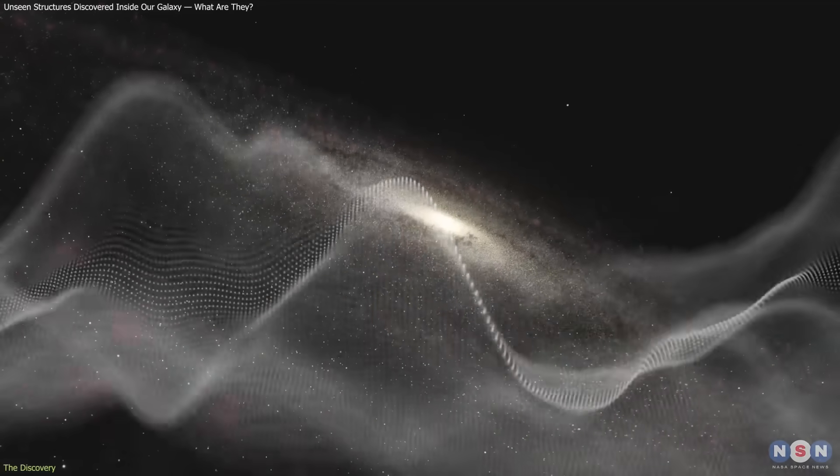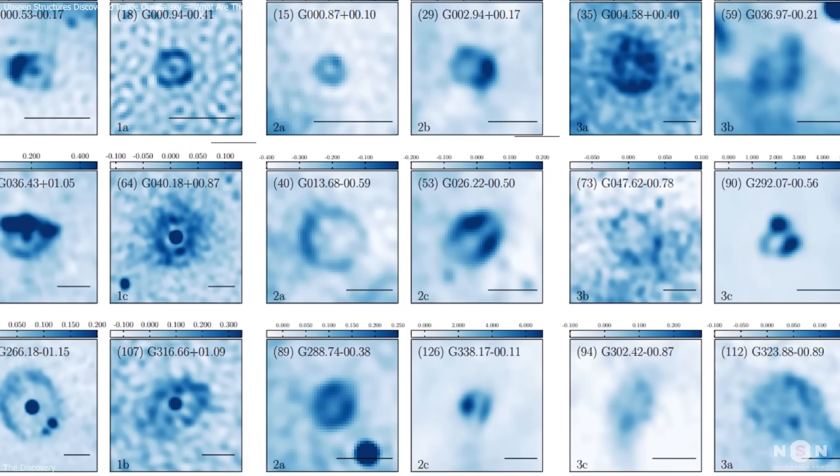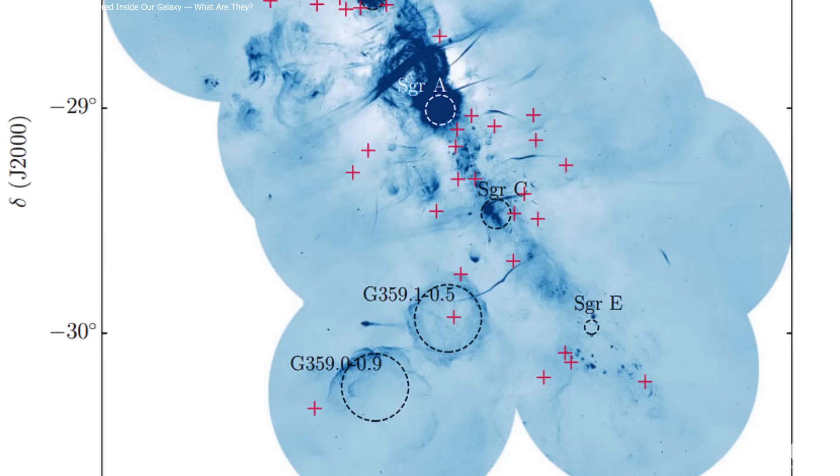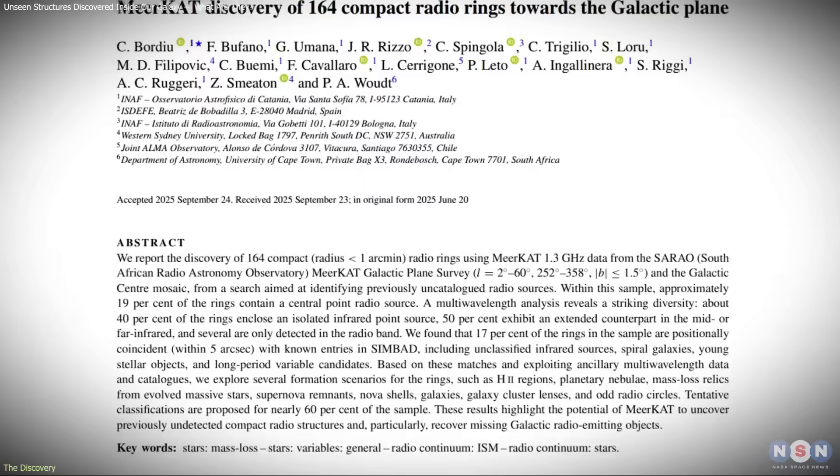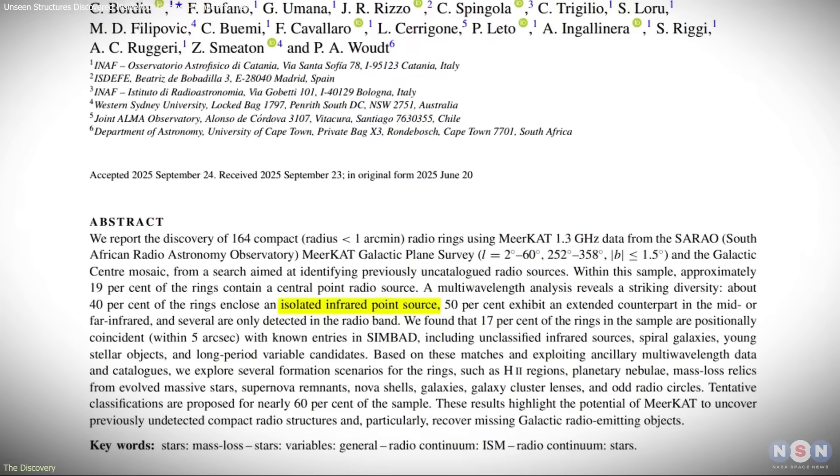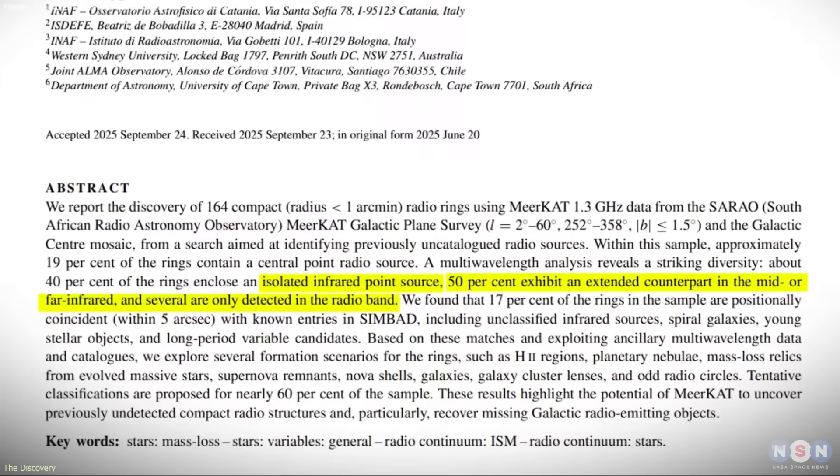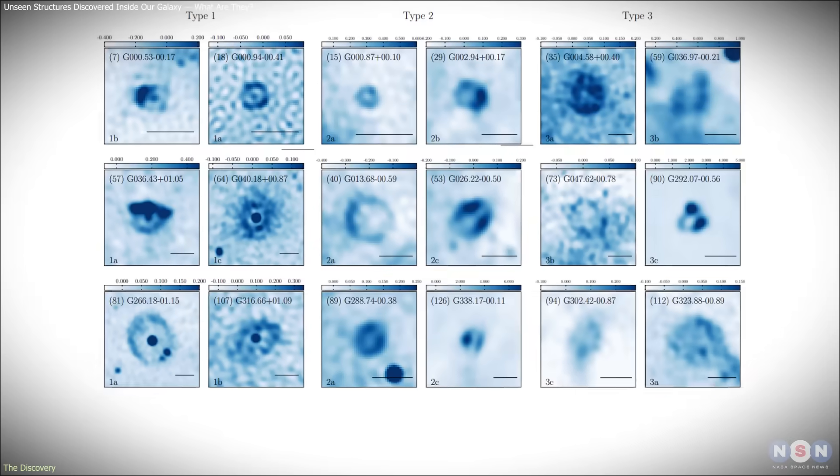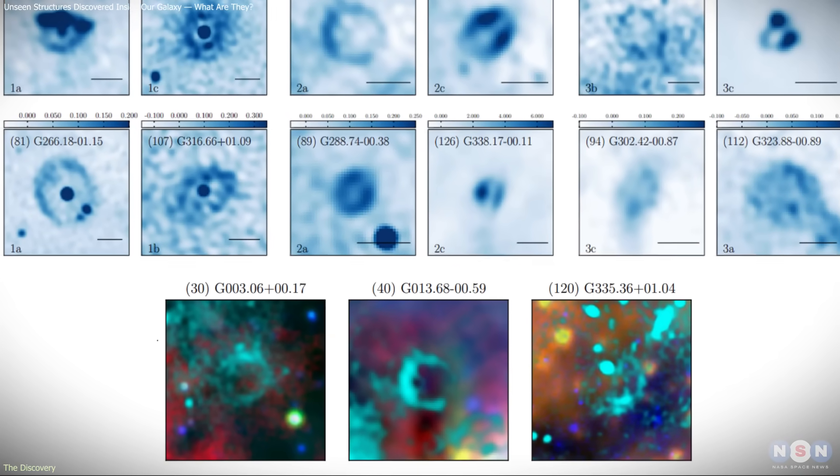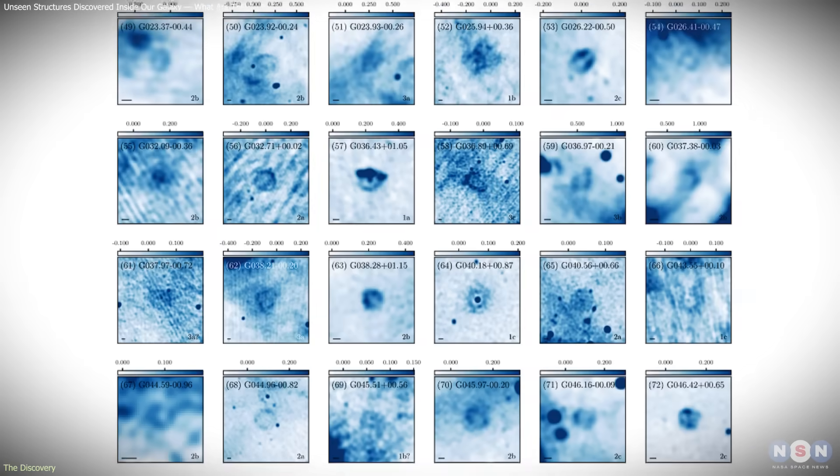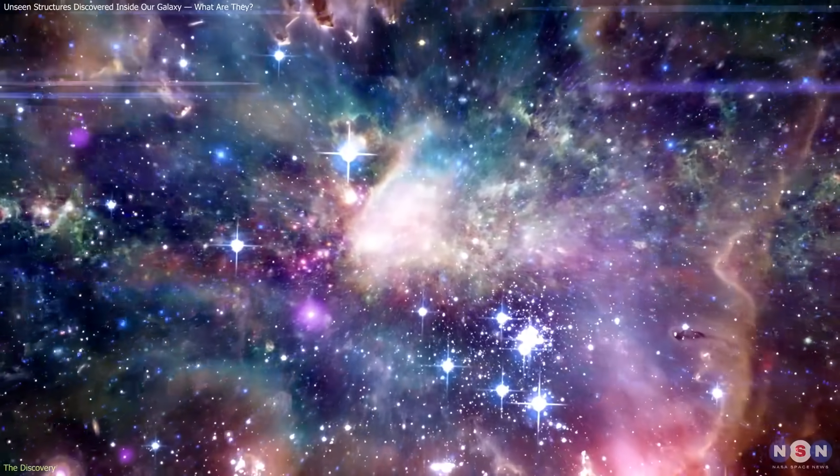But radio waves pass through it, revealing structures hidden deep inside the galaxy. Each ring is less than one arc-minute across, but collectively, they display remarkable variety. About 40% contain an infrared point source at their center. Around 50% show extended mid- or far-infrared emission. Some exist only in radio, with no multi-wavelength counterpart. Nearly 20% have a central radio point source, hinting at stellar activity or remnants inside.